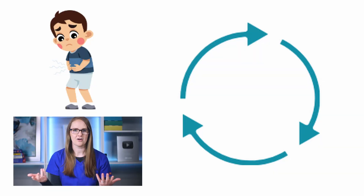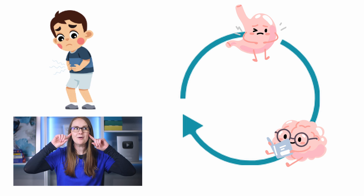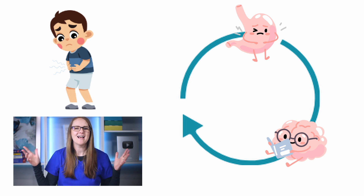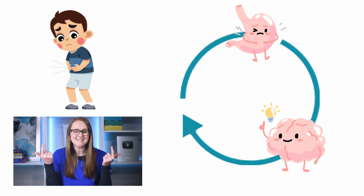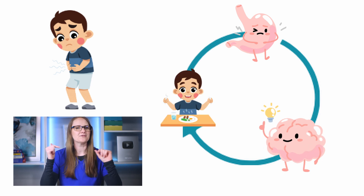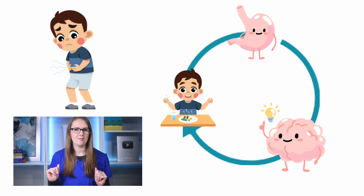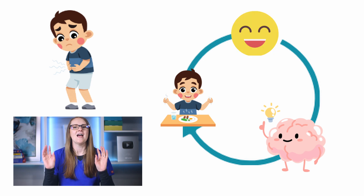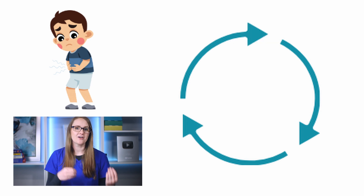Here's a simple example: hunger. When you're hungry, your stomach tells your brain, 'I need some food, please,' and that feedback loop is triggered. Your brain responds and tells you to eat. Once you've eaten, your stomach tells your brain, 'I'm good here, thanks for the food.' And now that feedback loop circles back around and pauses until you're hungry again. That's a feedback loop.